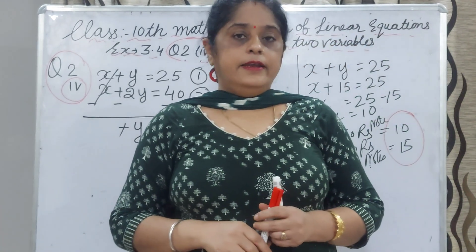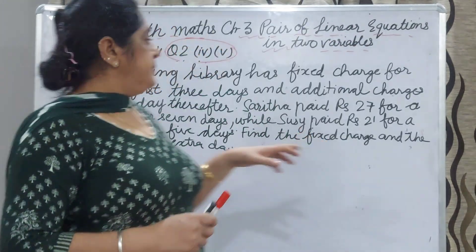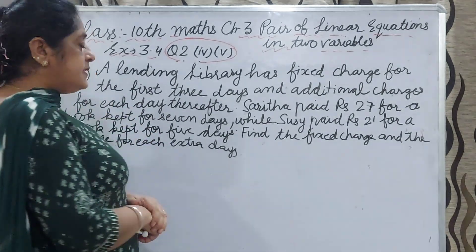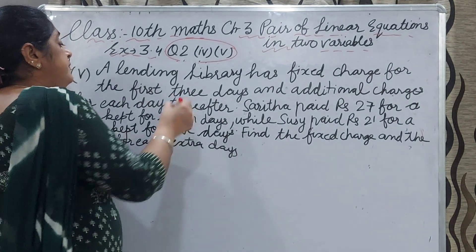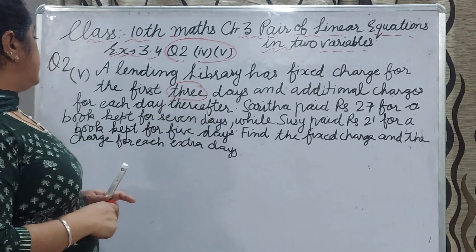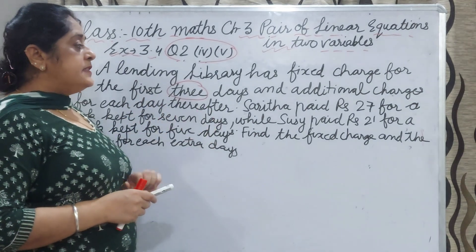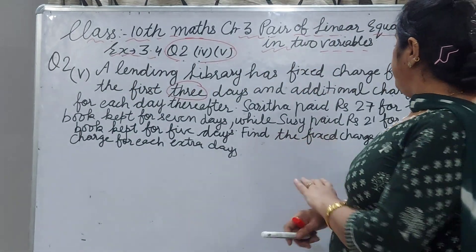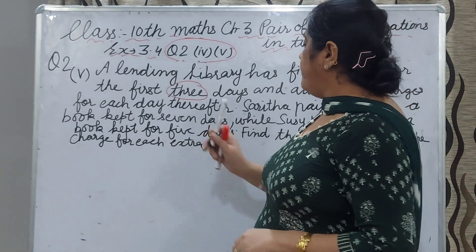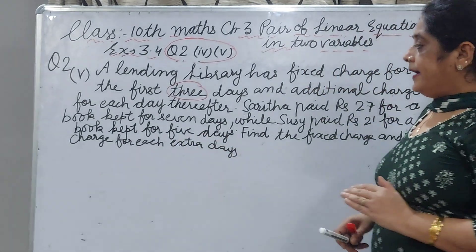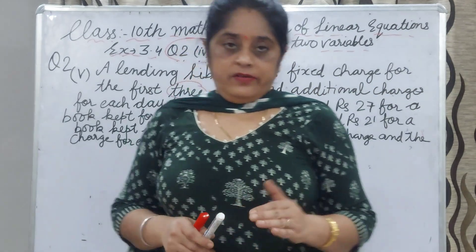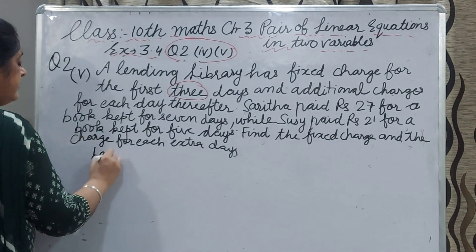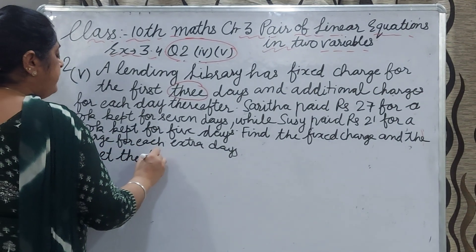Now I will explain next part, question 2 fourth part. Statement is: a lending library has a fixed charge for the first 3 days, first 3 days fixed charge, and additional charges for each day thereafter. Sarita paid 27 rupees for a book kept for 7 days, while Sushil paid rupees 21 for a book kept for 5 days. Find the fixed charges and the charges for each extra day. First, we assume let the fixed charges is rupees x.